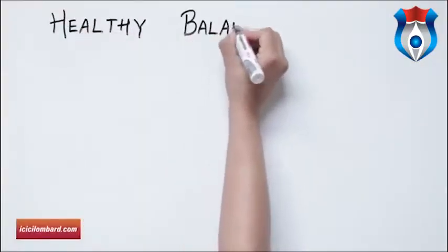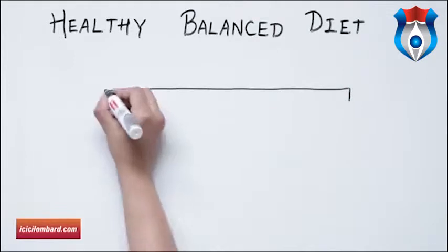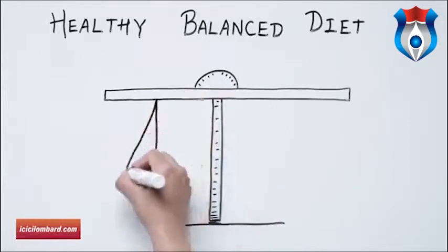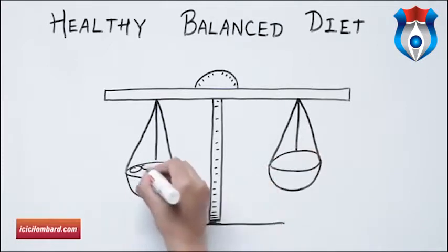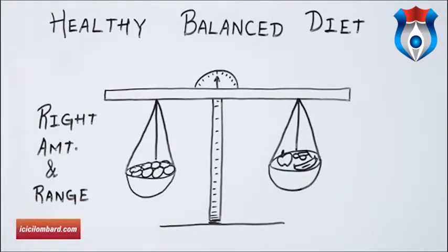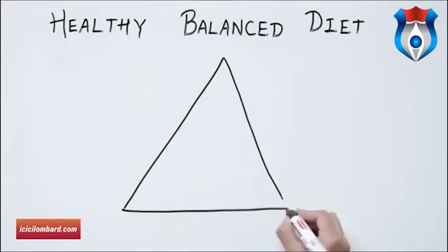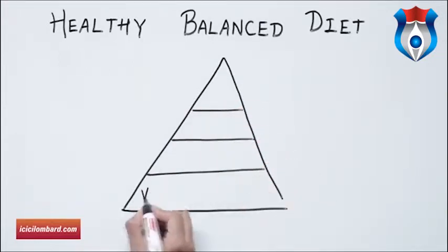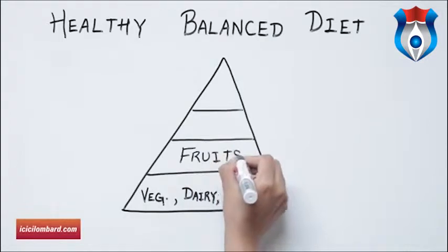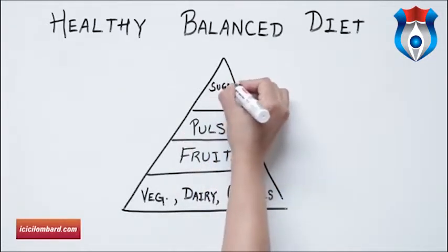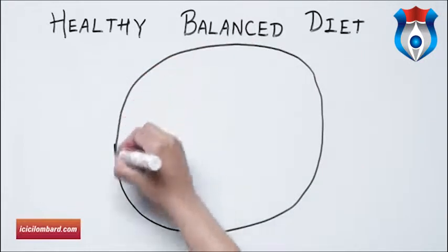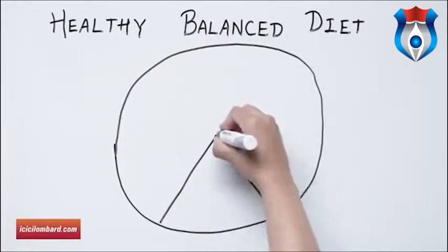A balanced diet provides you with all the nutrients to support growth, energy and health. The two keys to a healthy balanced diet are eating the right amount of food for how active you are and eating a range of foods. To achieve a balanced diet you must eat from each of the food groups in the food pyramid. The food groups are dairy products, vegetables, cereals, fruit, pulses, meat (for non-vegetarians), sugar and fat.